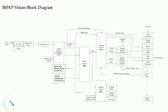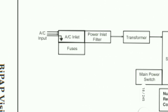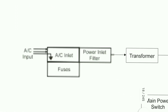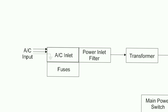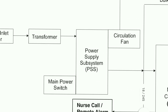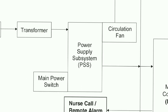From the AC power, the AC input goes to the AC inlet, then there are fuses, then the power inlet, and it goes to the transformer. From there it goes to the power supply system — the PSS — and then there is the main power switch and circulation fan.